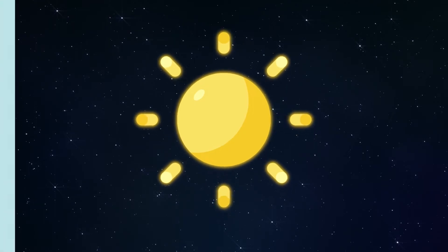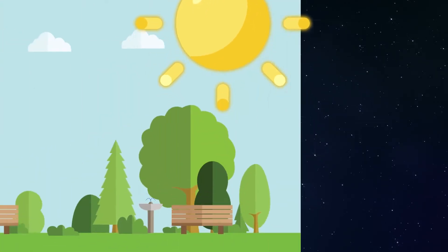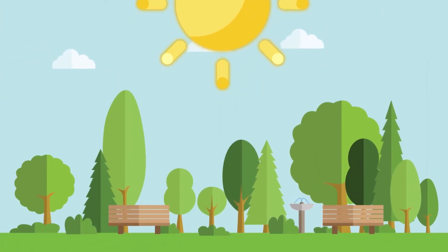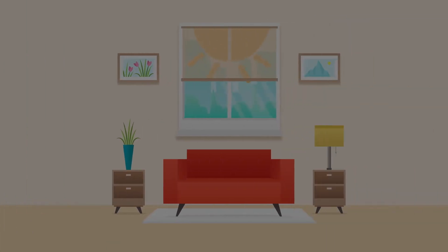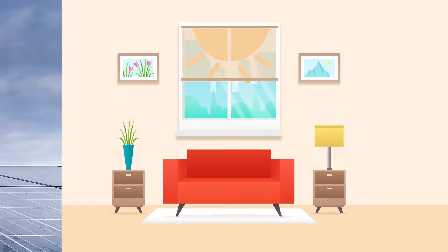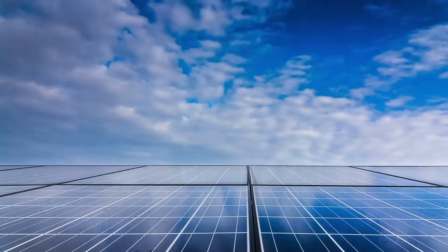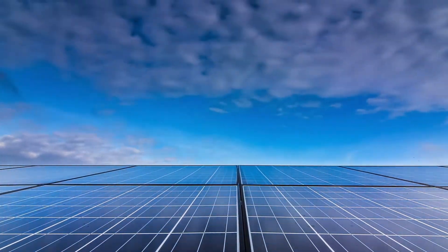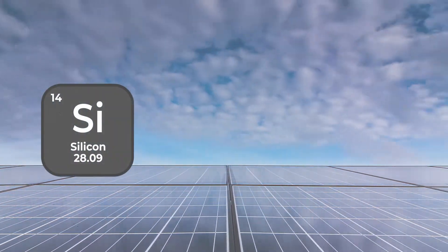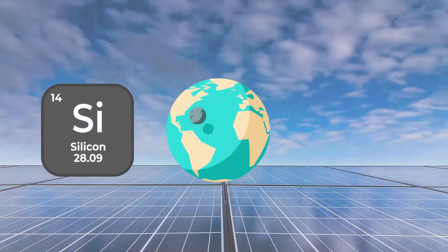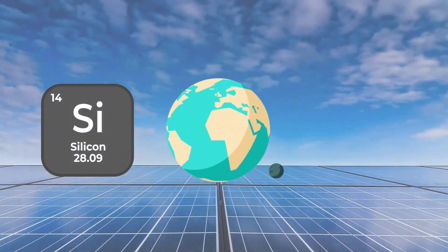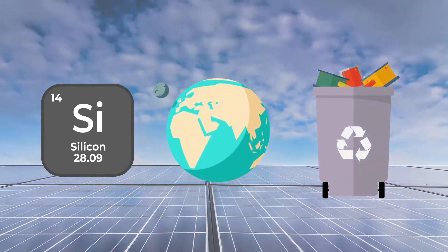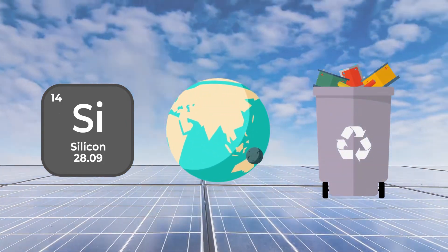The sun is the world's number one source of energy for all living things. The sun's energy can be efficiently converted to electricity using silicon-based solar photovoltaic panels without causing harm to the environment. Silicon is the most abundant mineral on Earth, and solar PV panels are 100% recyclable.